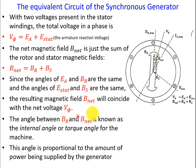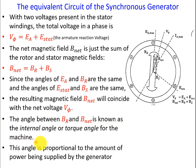The angle between BR and B_net, called delta, is known as the internal angle and the torque angle for the machine. This angle is proportional to the amount of power being supplied by the generator.